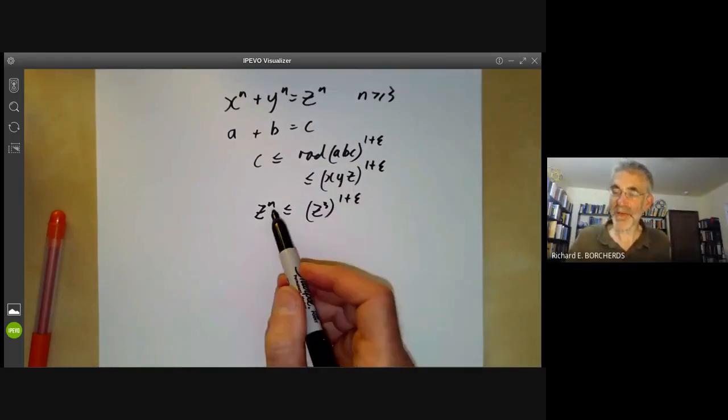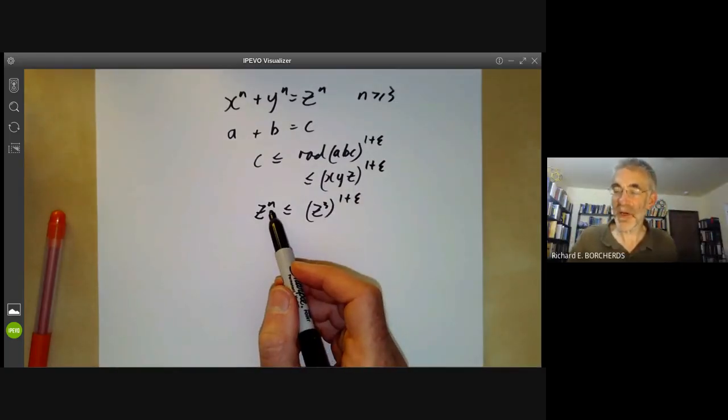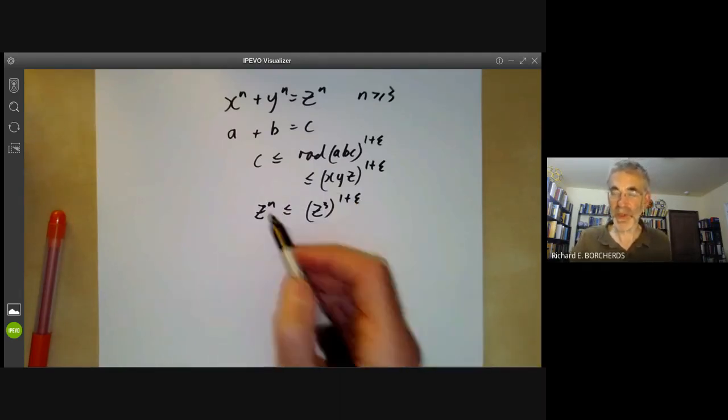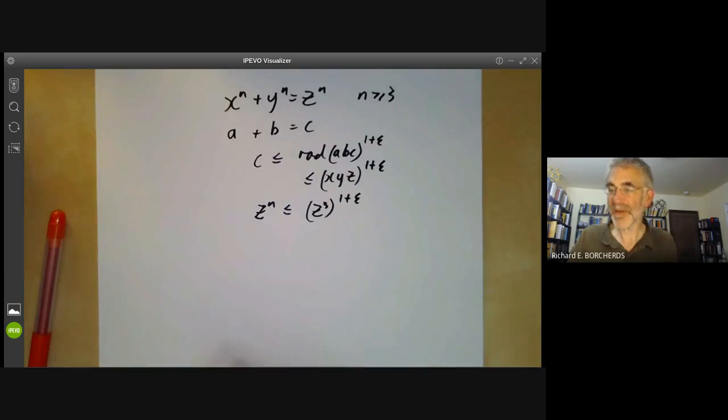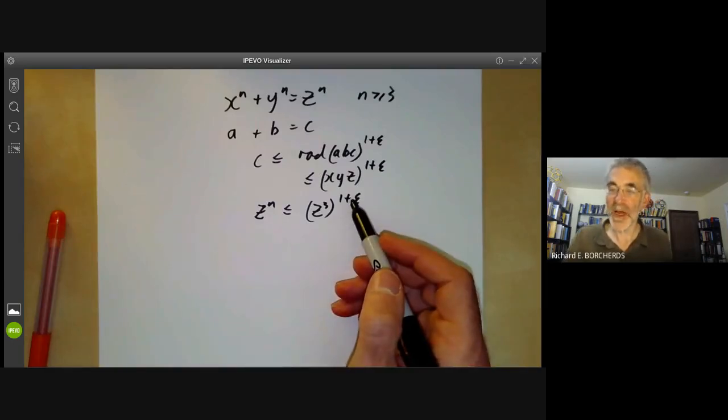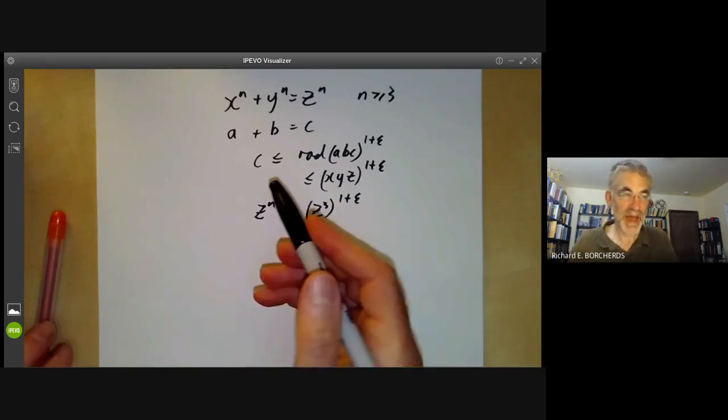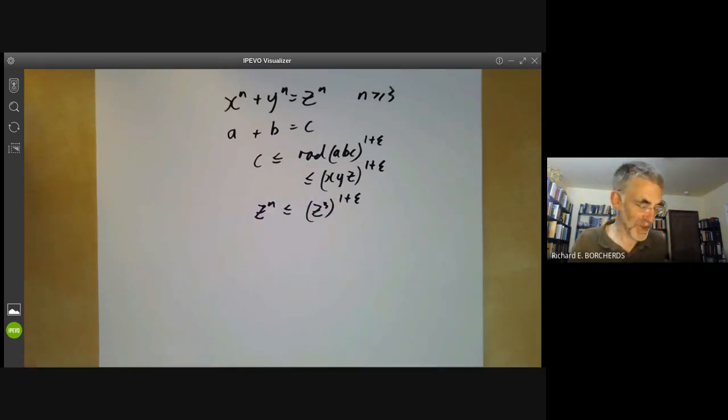And obviously if n is sufficiently large and epsilon is sufficiently small then there are only going to be a finite number of solutions to this and if you had a precise version of the ABC conjecture this would allow you to give a proof of Fermat's last theorem. Of course the problem with this is that Fermat's last theorem was proved by Andrew Wiles by a different and very difficult method many years ago but this just gives an example of how the ABC conjecture can be used to prove various other theorems.